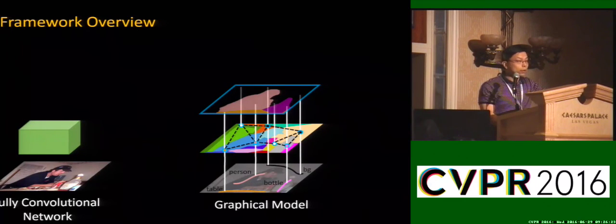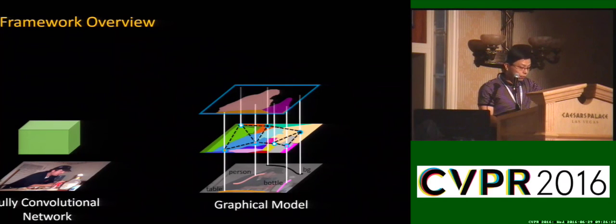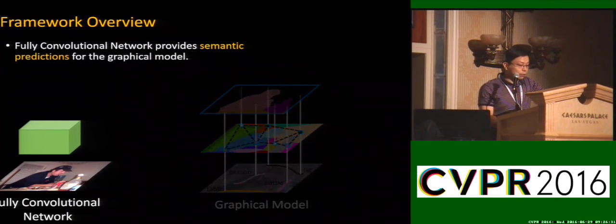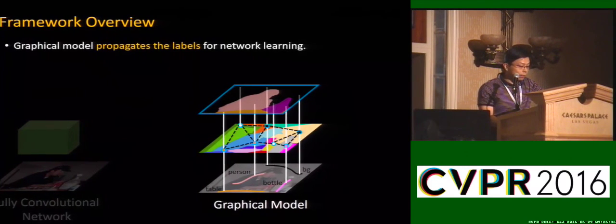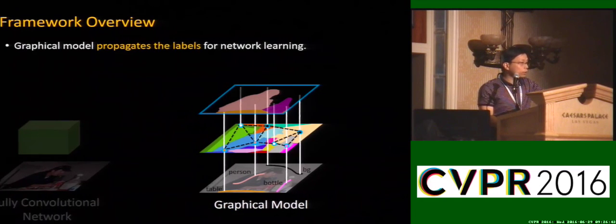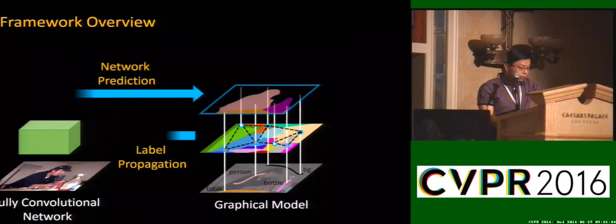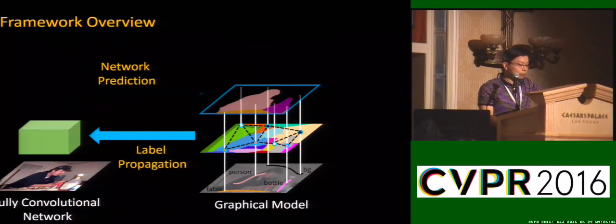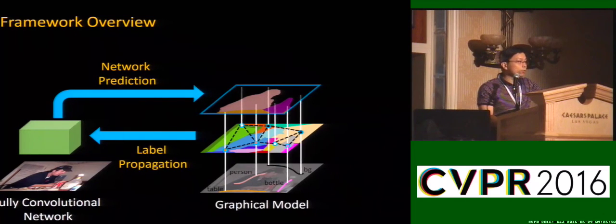We now introduce our framework. Our framework consists of two components: a fully convolutional network and a graphic model. The fully convolutional network provides semantic prediction, and our graphic model propagates labels from scribble annotation. The propagated labels are used for supervised learning of the fully convolutional network. These two components are connected by network prediction and label propagation, and they iterate to improve the result quality.